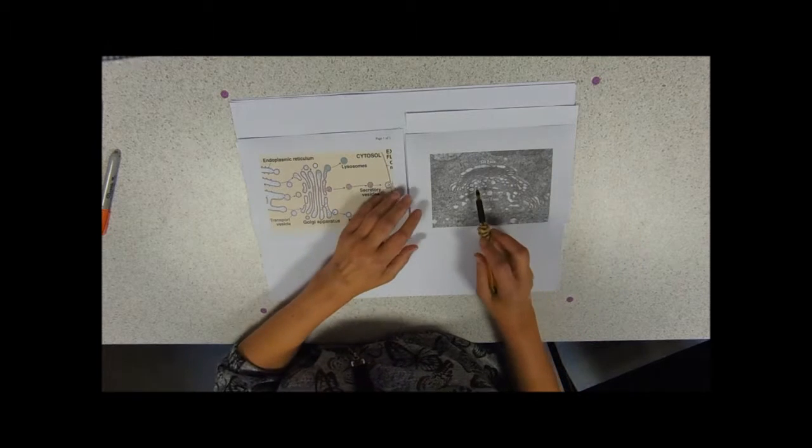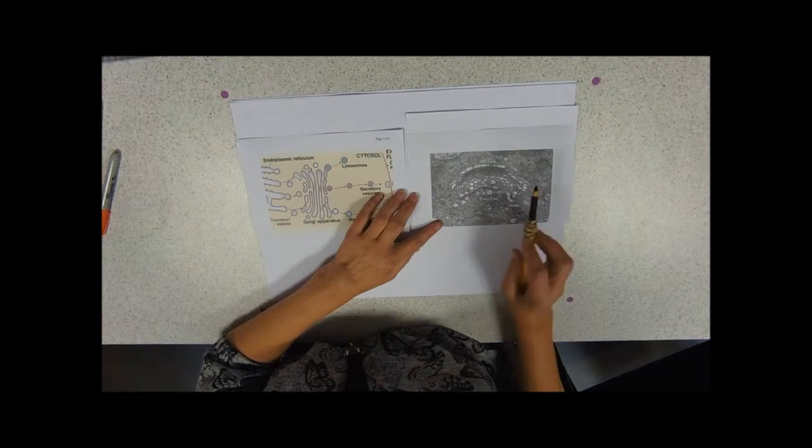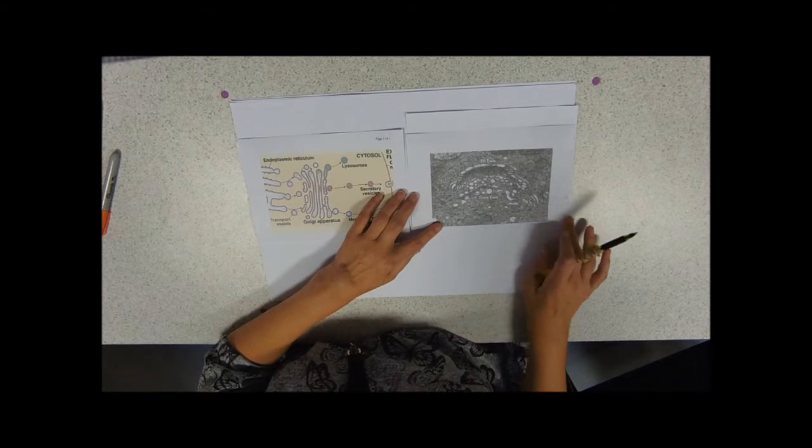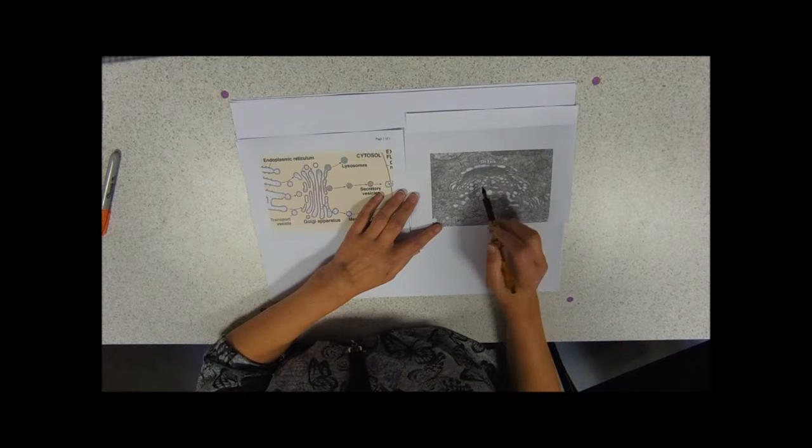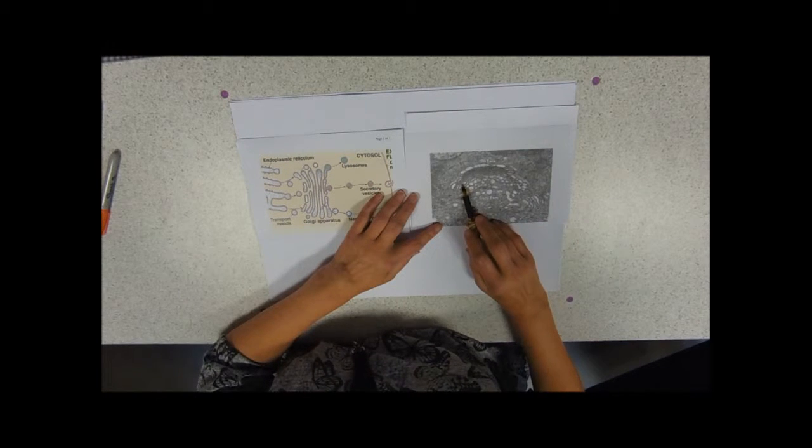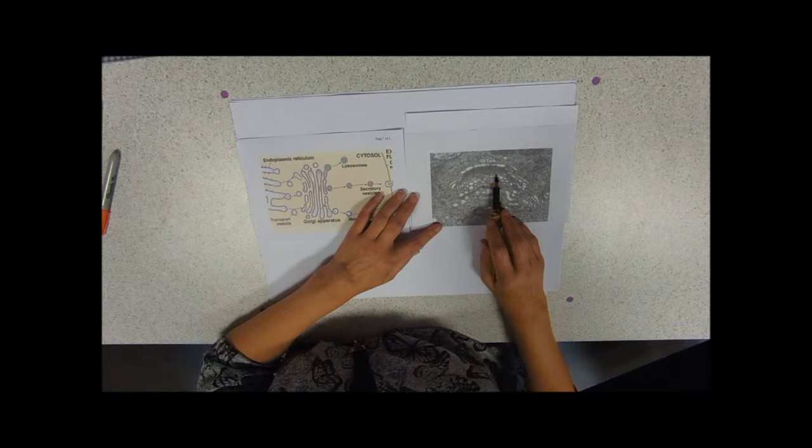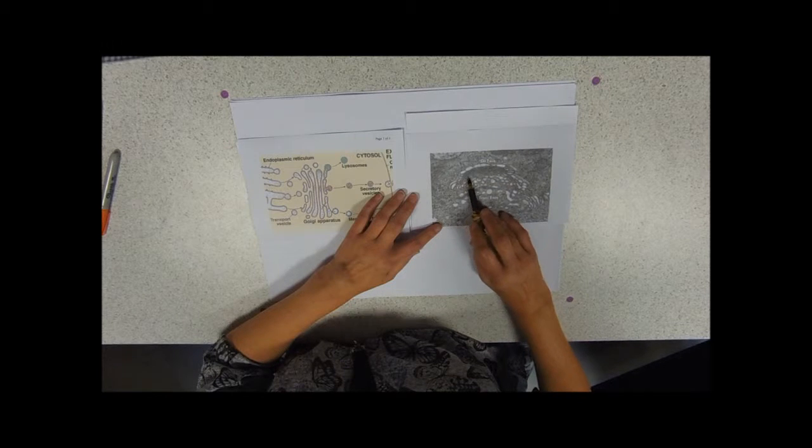If you look at the electron micrograph first, this is a picture taken down an electron microscope with very good resolution and magnification. You can see that we've got these double tram lines, but they're in a curve.